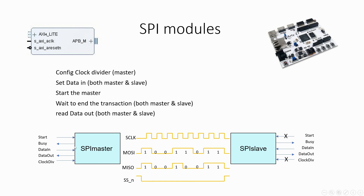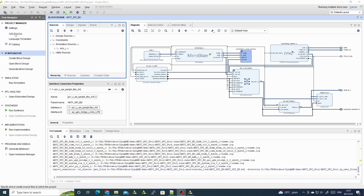In the simulation we will set the configuration in advance, generate the start signal, and see the data transferred from the master to the slave and back. In the real design all of this will be done by the CPU. The CPU will configure all settings, give the master the start signal, monitor both busy bits, and once the transaction has ended, read the data out.